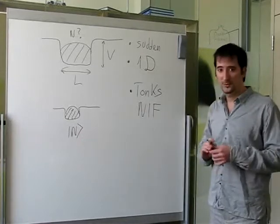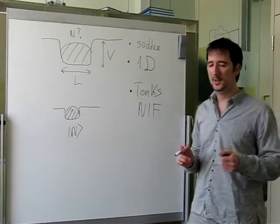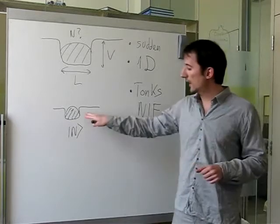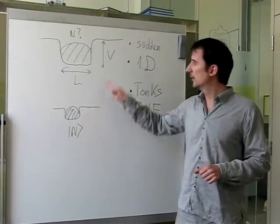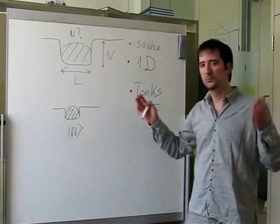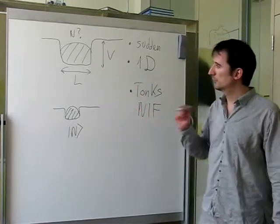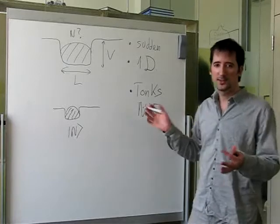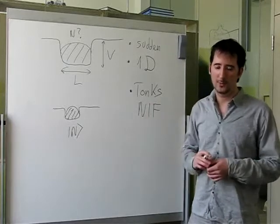Moreover, the whole procedure is robust against variations in the trapping potential, so we can consider different types of potentials—square well, harmonic traps, and so on. And also, it's robust against the effect of temperature.